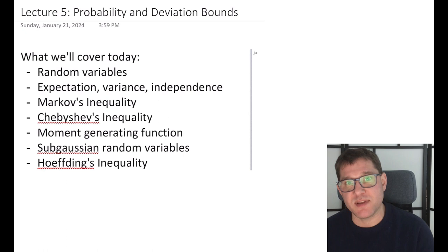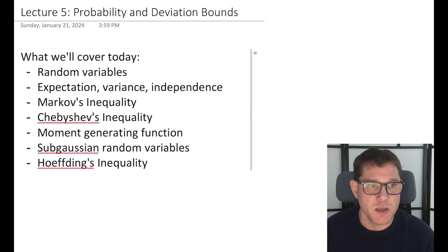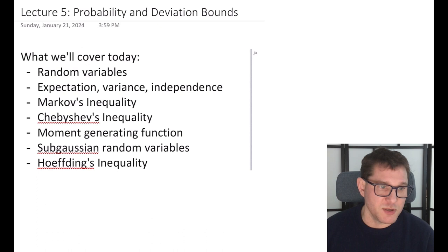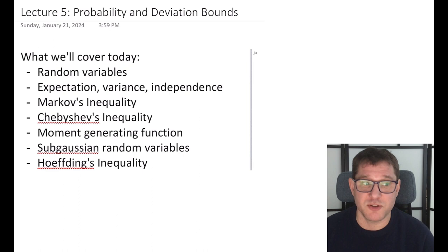Today we're going to talk about probability and deviation bounds. The goal is to get to Hoeffding's inequality, which is maybe the most important probability result we'll use throughout the class — it's a foundational result in learning theory. To do that, I'll review basic ideas: expectation, random variables, variance, independence, and then basic inequalities like Markov's inequality, which is used to prove Hoeffding's inequality. Chebyshev's inequality is mostly an exercise.